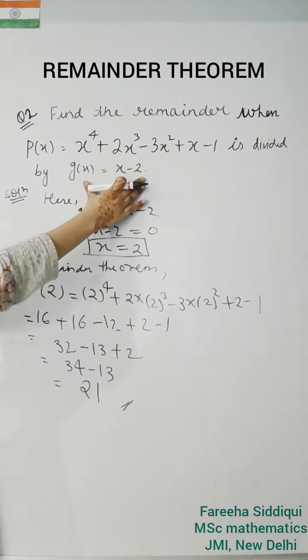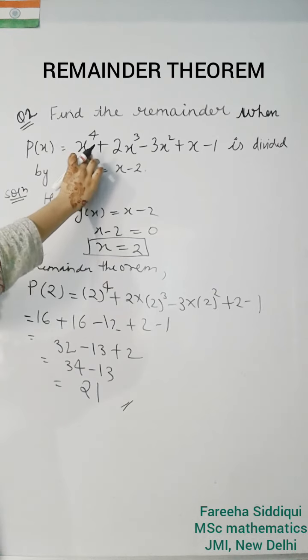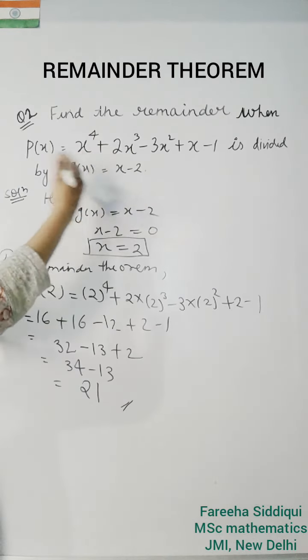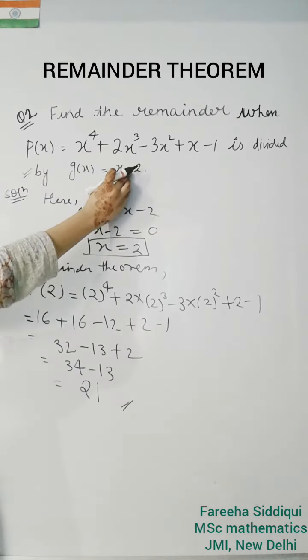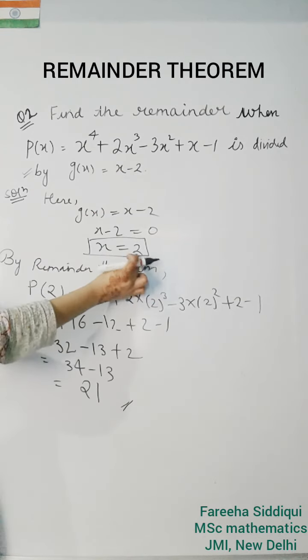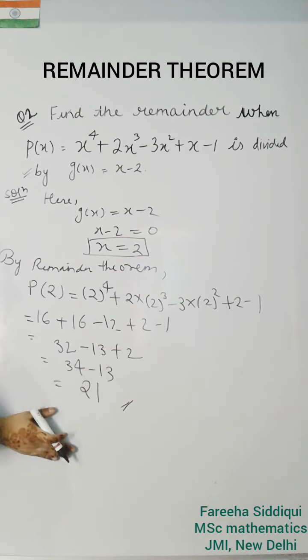gx always should be degree 1. It should be of degree 1 always. And px can be of any degree 1 or greater than 1. So if we have gx linear polynomial, then we can easily put value of zero in px to get remainder. So this is the method.